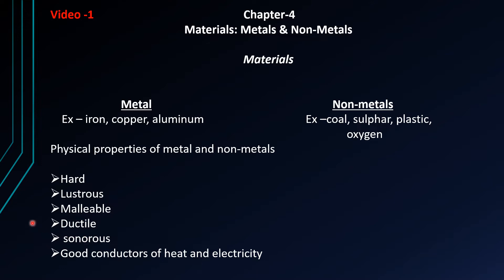Now, good conductor of heat and electricity — all metals are good conductors of heat and electricity; they allow electricity to pass through them, like copper, iron, and aluminium. But non-metals such as coal and sulfur are bad conductors — they do not pass electricity; they are insulators.